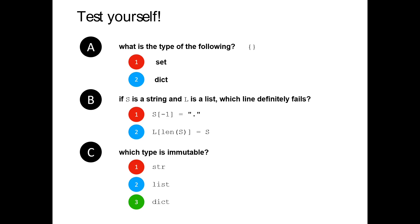Let's take a look at question C first as it might give us better clues for B. Question C asks which type is mutable — and remember, mutability is the ability to change. Is it a string, a list, or a dictionary — which one can I not change? This is a deceptive question. There's a huge difference between changing an object and reassigning it. Anytime we use an equals we're basically reassigning the variable, not changing the data it's pointing to. Empty curly braces would be a dictionary, not a set.